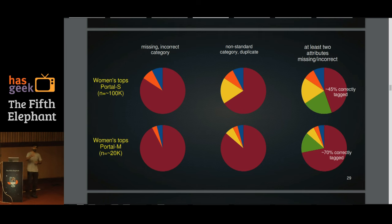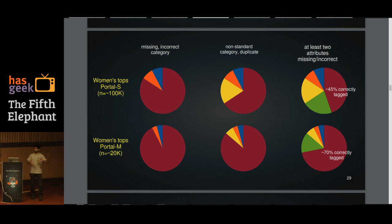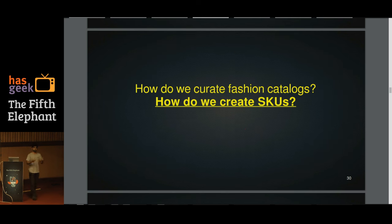When we filtered for unique products with no duplicates and consistent naming, only 65% of products from Portal S and about 86% from Portal M were well tagged. When we applied one more criterion — requiring more than two attributes to be well tagged, such as pattern, length, or sleeve — that number dropped to 45%. So clearly we have a problem. How do we curate such fashion catalogs and create SKUs?